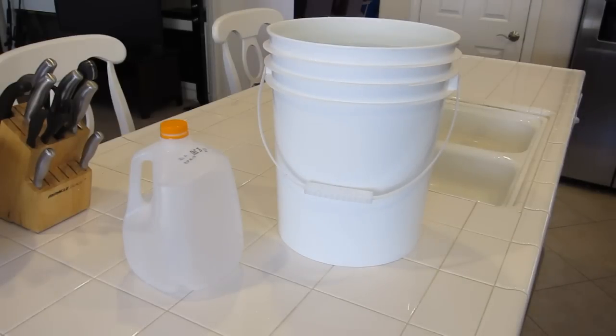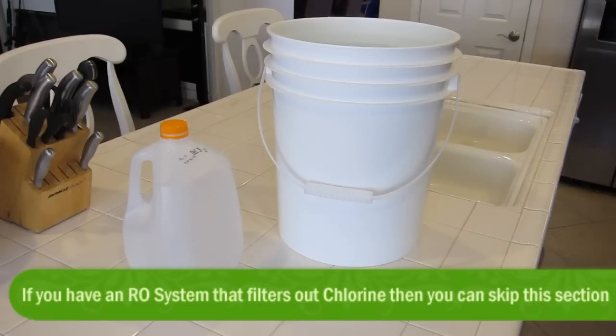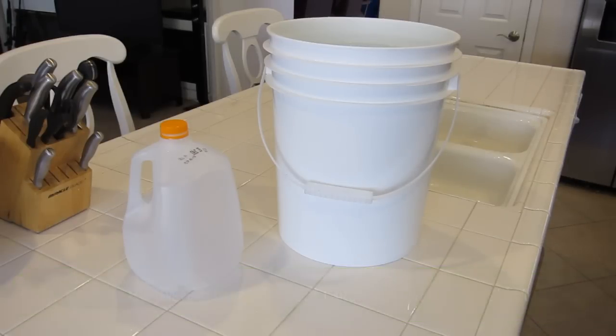Now we have our bucket of water filled up. What we need to do is de-chlorinate it. Most water has chlorine added, and that is to help kill certain bacteria and keep the water clean. Unfortunately, in hydroponics with exposed roots, it's a very sensitive ecosystem and the chlorine can actually retard the growth of your seedlings. So we're going to get that chlorine out, and it's very easy to do. There's two ways you can do it.